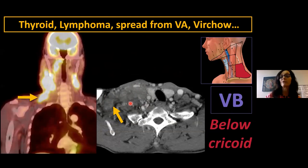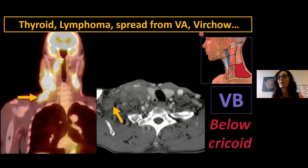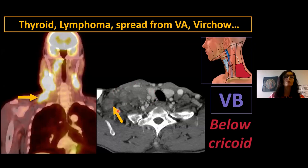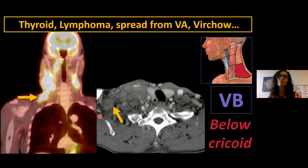Don't forget that supraclavicular nodes — level 4 or 5B — are also known as Virchow nodes, meaning metastatic disease can be from the chest, abdomen, or pelvis presenting here. If the nodal mass is purely supraclavicular, look to the thyroid, then look to the chest, abdomen, and pelvis.